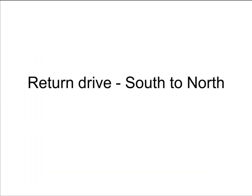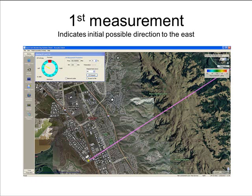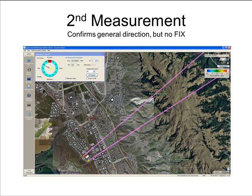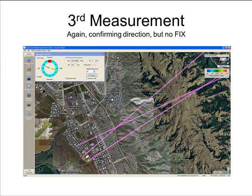To confirm the measurement, we turned the vehicle around and drove the same route again, leaving the system to automatically take direction-finding measurements every 45 seconds. The first measurement shows a good direction to what we now believe to be the target emitter's location. The second measurement confirms the direction but does not provide a fixed point as there is no intersection between the two bearing measurements. The third measurement confirms the direction to the emitter and does provide intersection with previous bearing measurements, but a fixed point has still not been calculated.